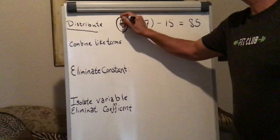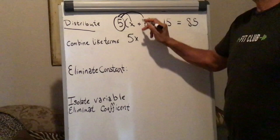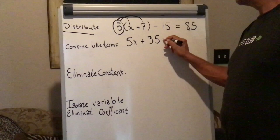Take this 5 and multiply both terms. 5 times x is 5x. 5 times 7 is 35. I'm rewriting the equation.